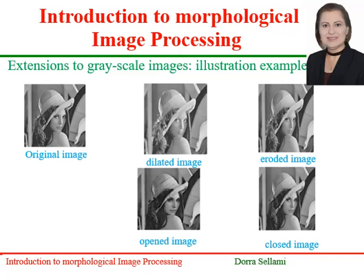We can notice the impact of each operator. The dilation operator makes the image brighter. The erosion operator makes it darker. The opening and closing have an impact of making more homogeneous darker zones and brighter zones respectively, while keeping the borders not affected.